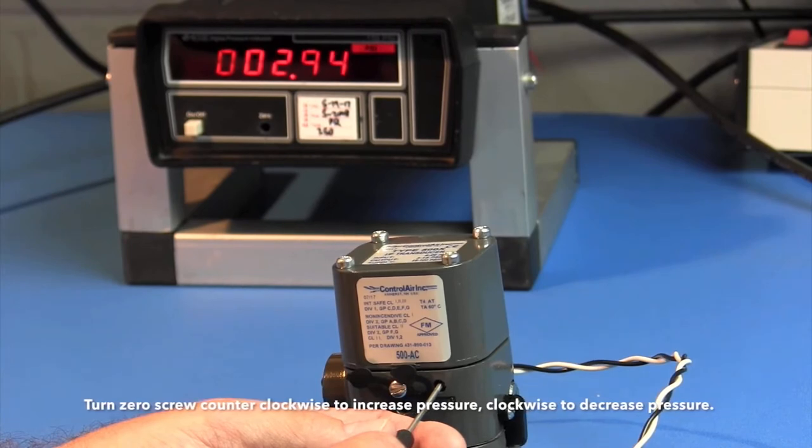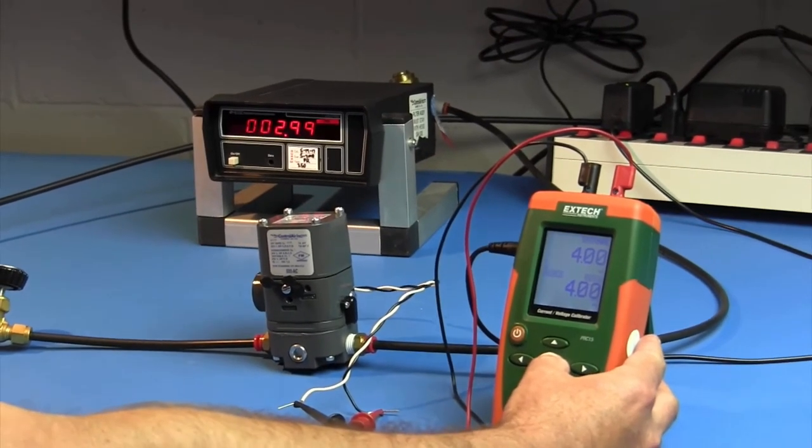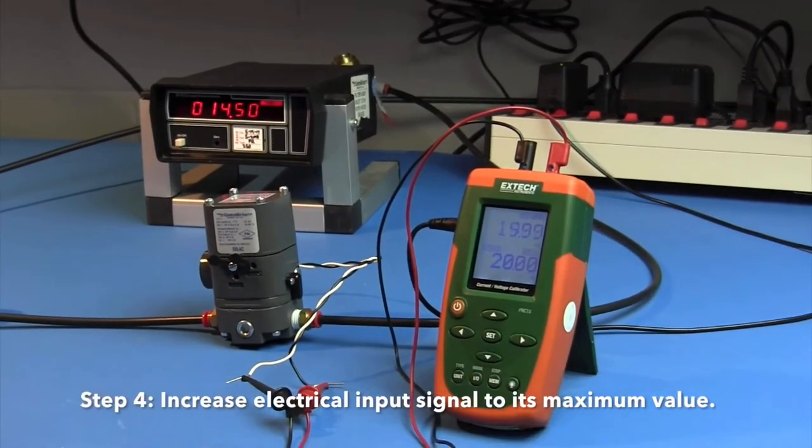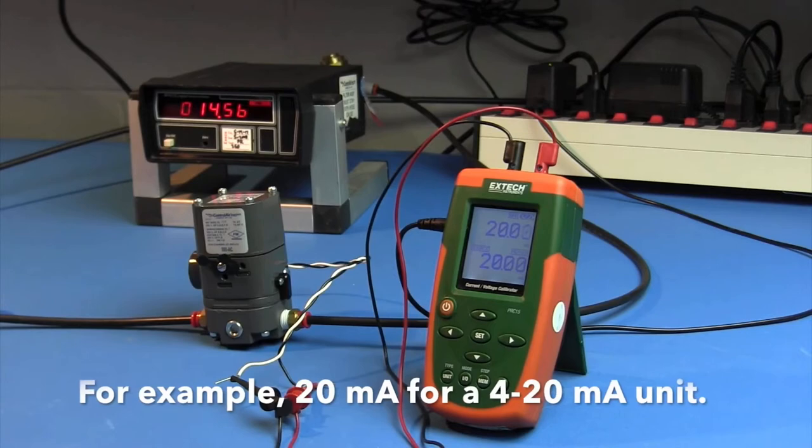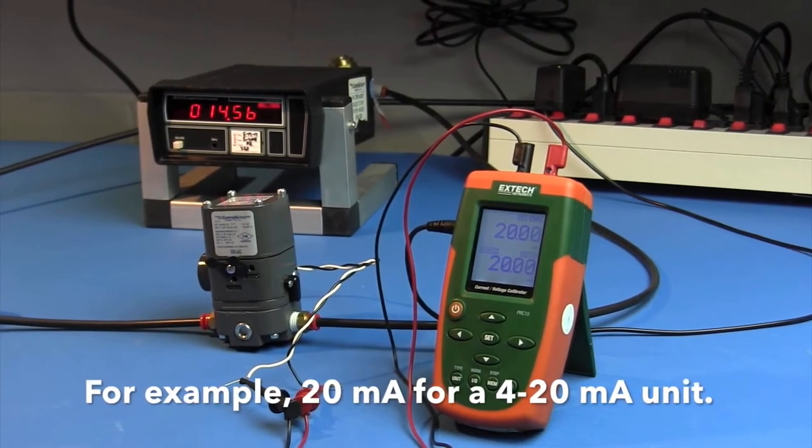Step 4. Increase electrical input signal to its maximum value. For example, 20 milliamps for a 4 to 20 milliamp unit.